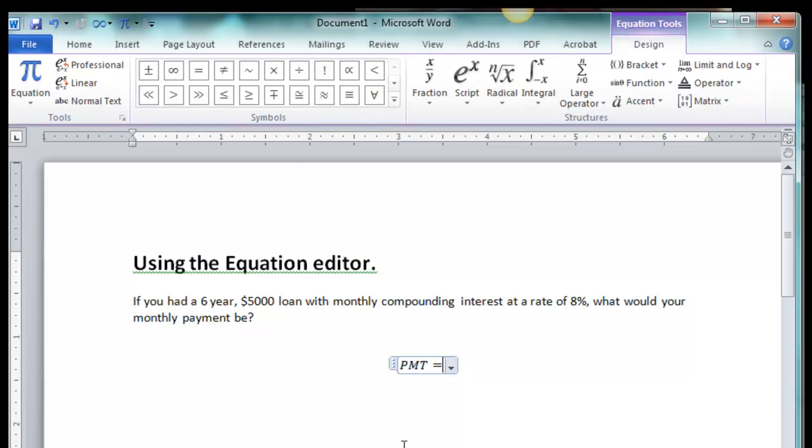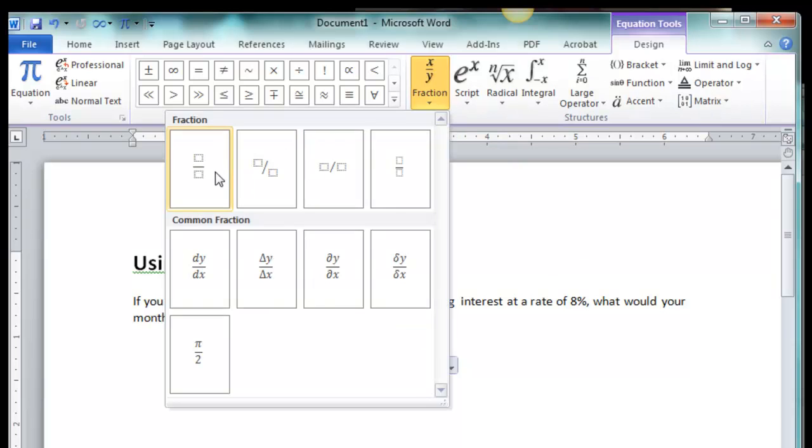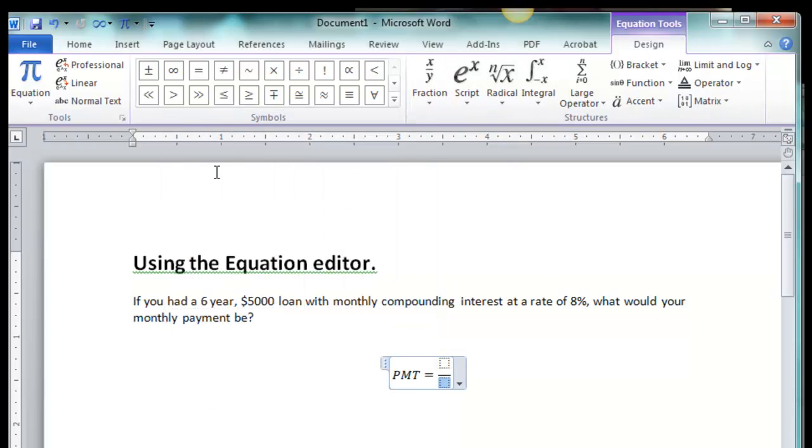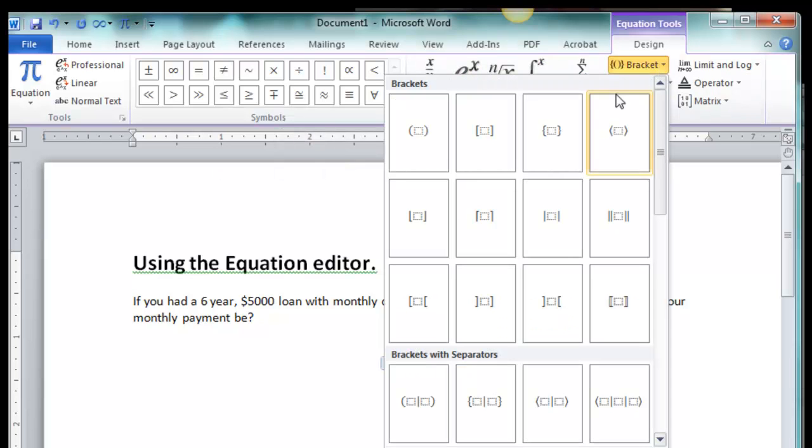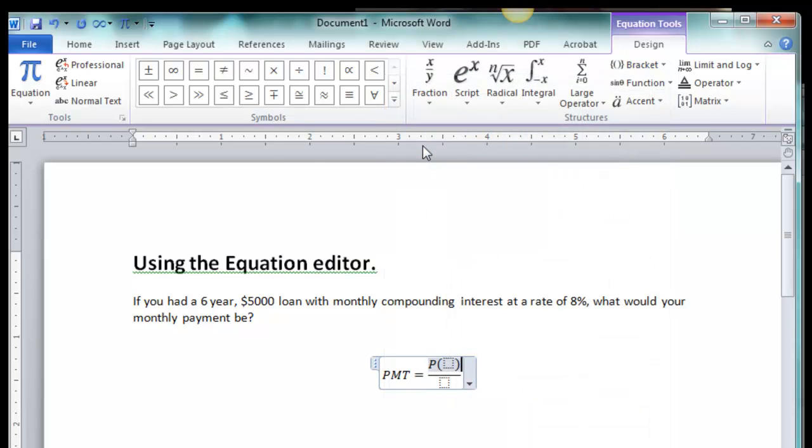Alright, so now that formula is a fraction, so I'll insert a fraction, arrow back into here. It's P times parentheses, so I can go over here under Brackets, here's parentheses, within that I'm going to have a fraction, r over n.